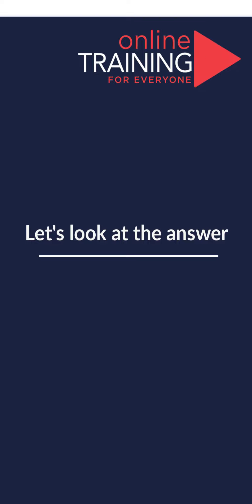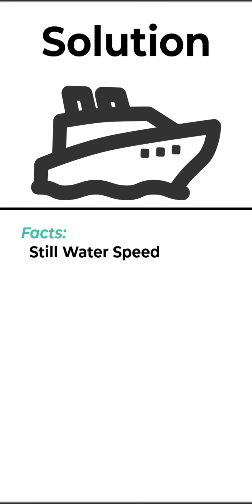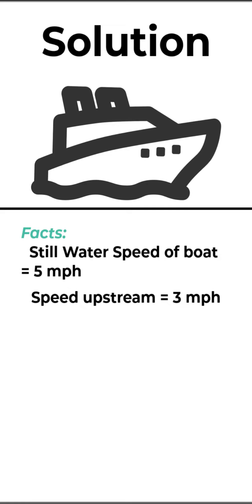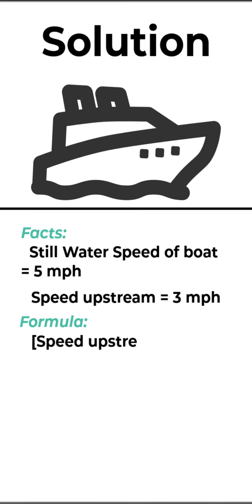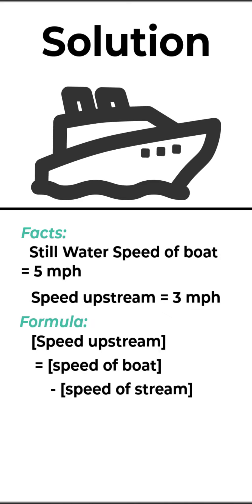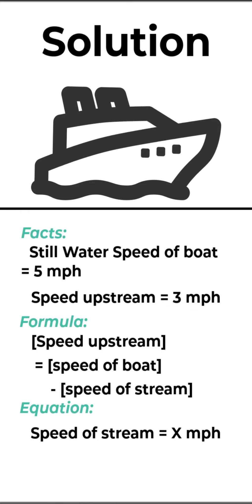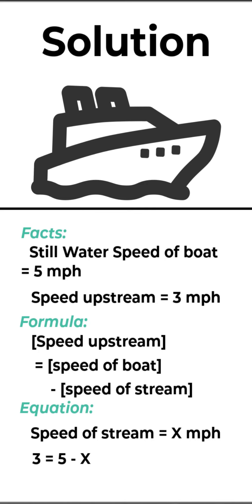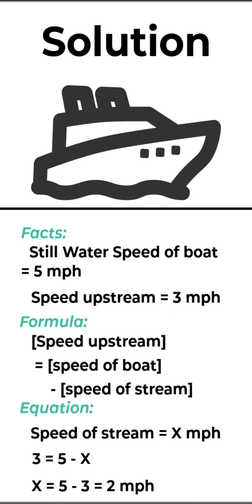To solve these types of challenges, let's first look at the facts. The main two facts are: the still water speed of the boat is 5 miles per hour, and the speed upstream is 3 miles per hour. The main formula is: speed upstream equals speed of the boat minus speed of the stream. So our equation is 3 equals 5 minus x, where x is the speed of the stream. Therefore x equals 5 minus 3, which is 2 miles per hour.